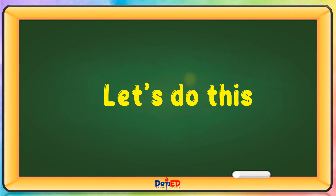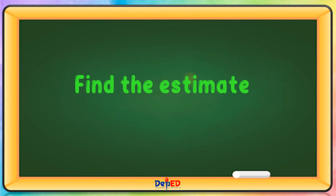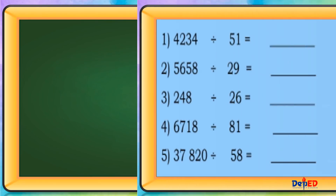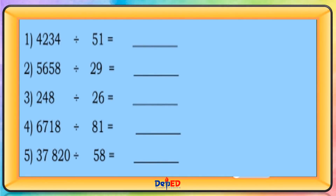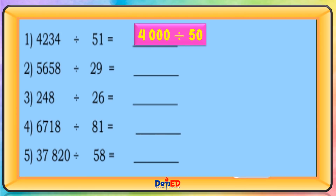Let's do this. Find the estimated quotient. 423 divided by 51: round to 400 divided by 50, let's cancel, equals 80. 5,658 divided by 29: let's do the cancellation.